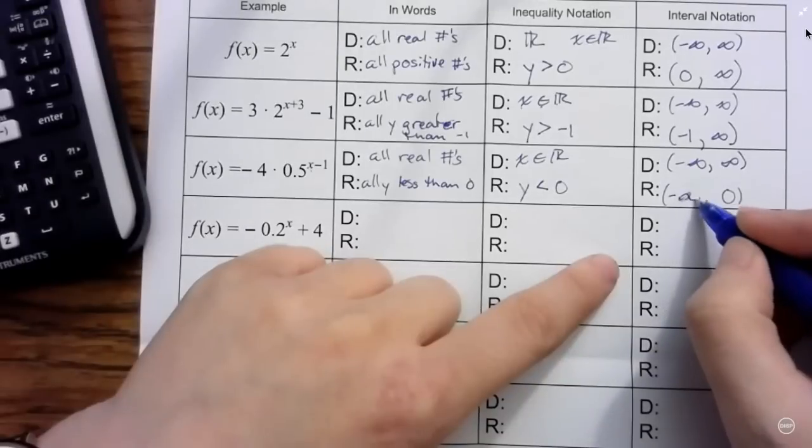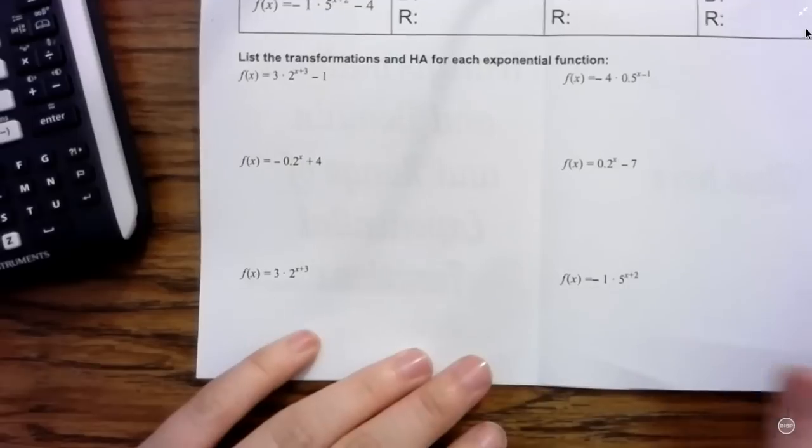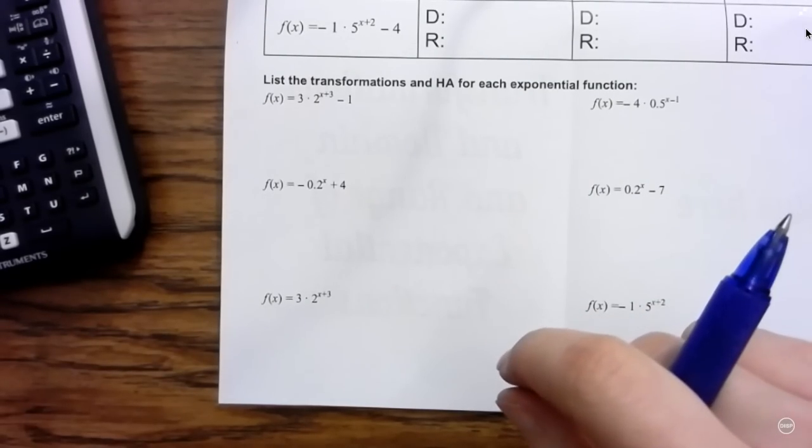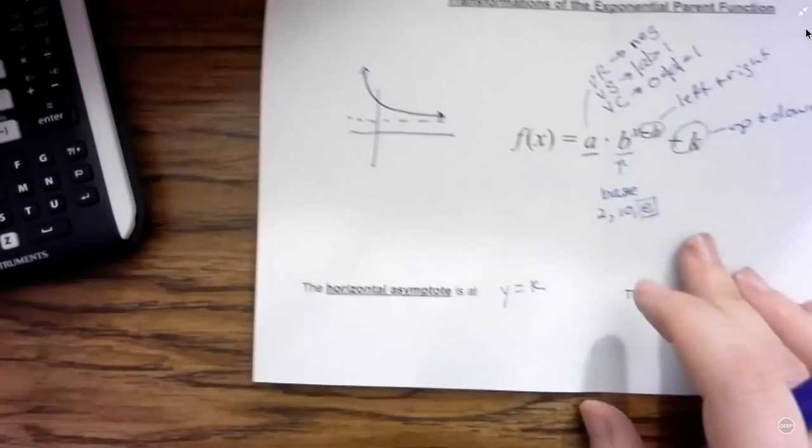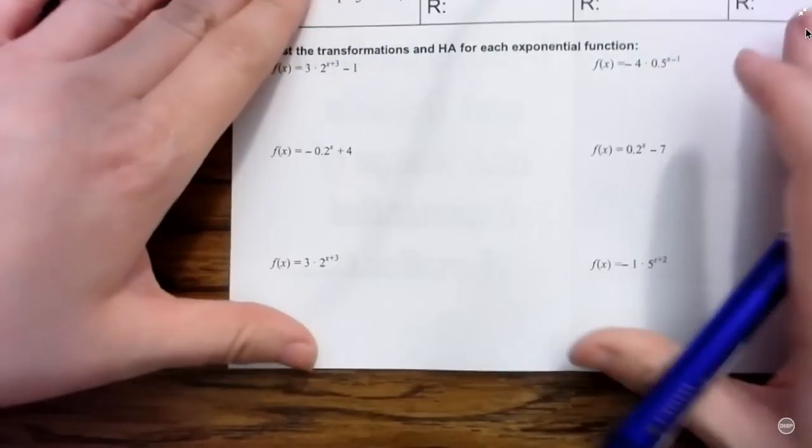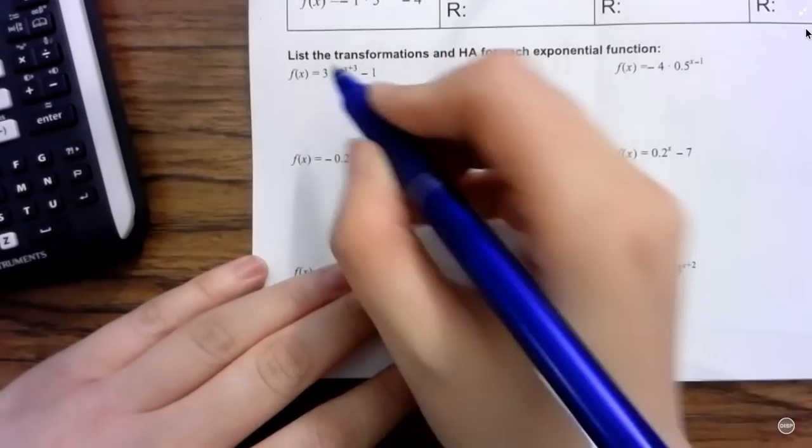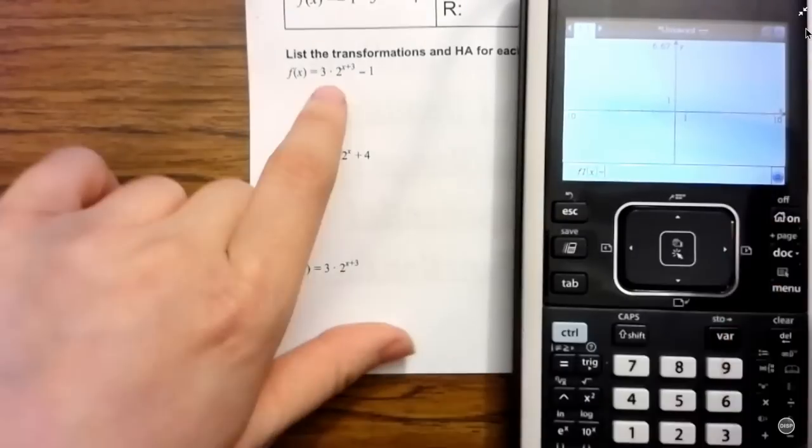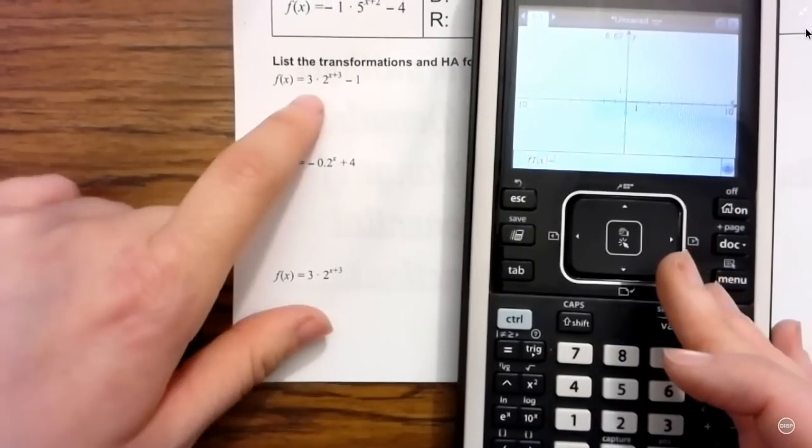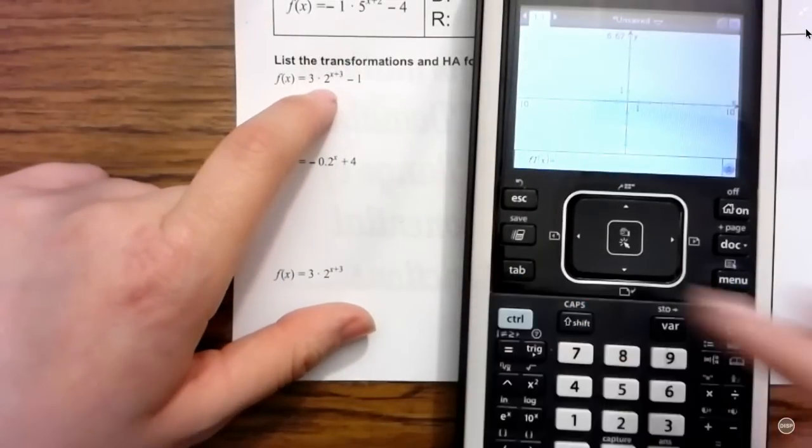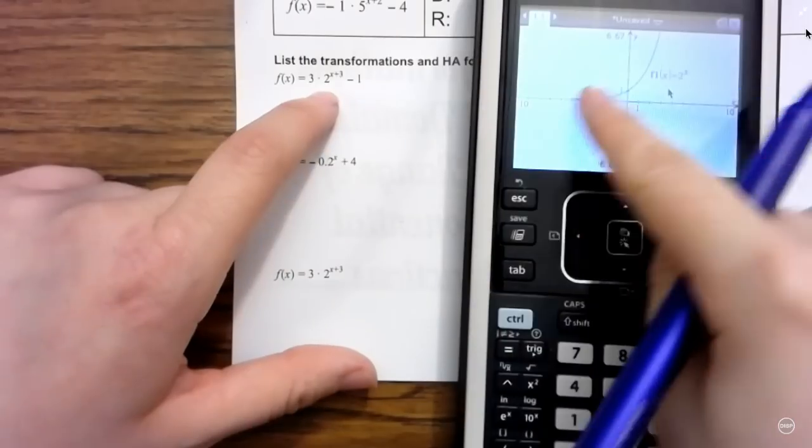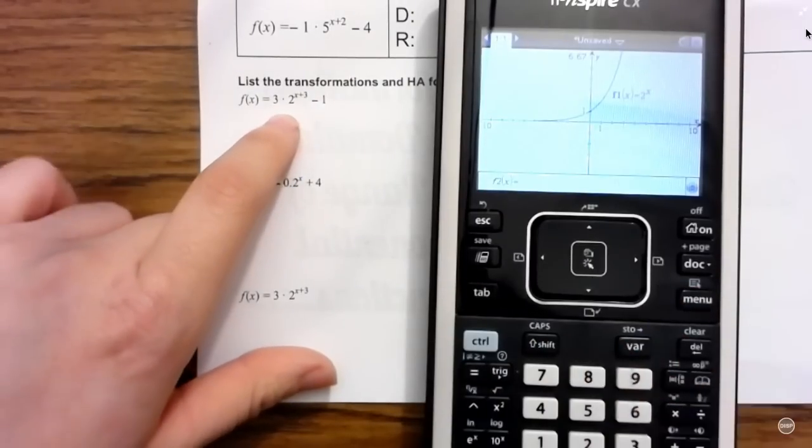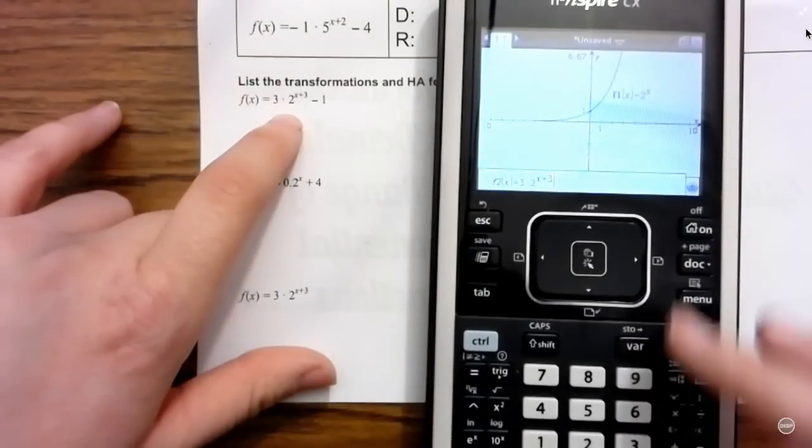So let's look at some transformations and horizontal asymptotes for each exponential function. So you can graph these to take a look at them, or you can use this kind of little cheat sheet here. But these are the same transformations that we've had on our other functions. So in this case, actually, I'm going to go ahead and graph it so that I can talk about it with you. This is a question I get all the time - what's really my parent function here? Well, you have to take whatever base it is and then to the x power. So in this case, my parent function is 2 to the power of x. So that's my parent function right here. And then I'm comparing it, so I'm going to put 3 times 2 to the power of x plus 3 minus 1.